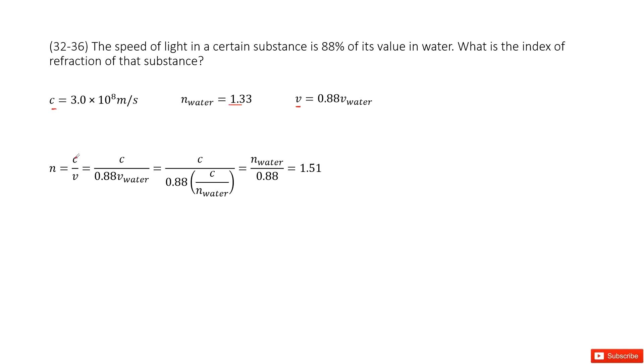By definition, we can use the speed of light in space C over V, where V is the speed of light in this substance. We replace V as 0.88 times the speed in water.